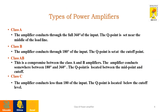Various types of power amplifiers are there, which are Class A, Class B, Class AB, and Class C, depending upon their conduction angle. Class A conducts for 360 degrees, Class B for 180 degrees, Class AB is between 180 and 360 degrees, and Class C conducts less than 180 degrees.